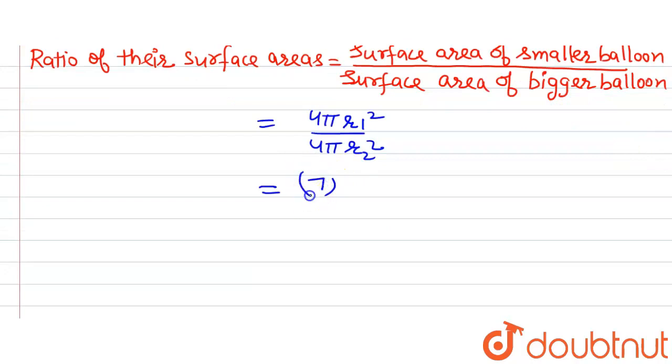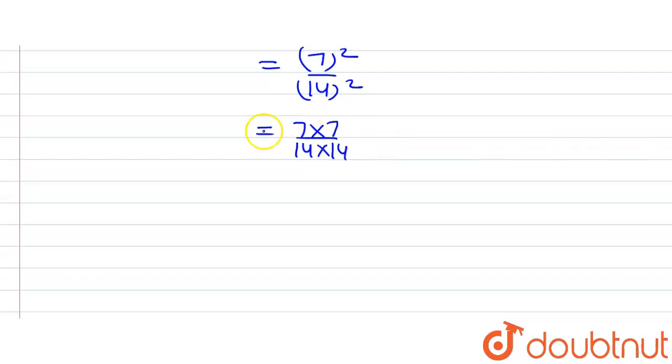This will be further simplified to 7 × 7 divided by 14 × 14, which gives us 49/196. Simplifying, 14 divided by 7 gives us 2, so we are left with 1/(2 × 2), and the ratio is 1:4.